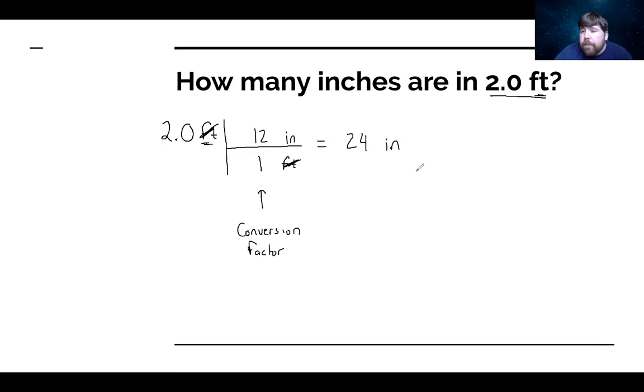Now, as far as significant figures go with dimensional analysis, the best way to approach this is whatever number of significant figures I start with is how many I end with. This has to do with the fact that our conversion factors are often, not always, exact measurements. And exact measurements have an infinite number of significant figures. So generally speaking, how many did I start with? 2. I'm going to end with 2 as well.